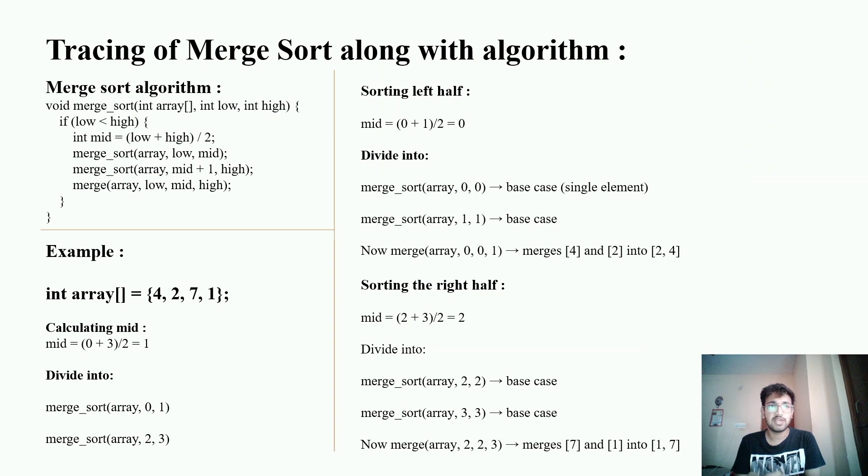We will be tracing the merge sort along with the algorithm. Here we have an entire array with a low and a high, low is basically the index of the starting array and high will be the length minus one. We will check if low is less than high, calculate the mid based on the low and high, recursively calling merge sort and in the final step we will be doing merge. Here we have a small example with four numbers in an array which is 4, 2, 7, 1. When we calculate the mid we will be getting the value of 1 and when we divide further.